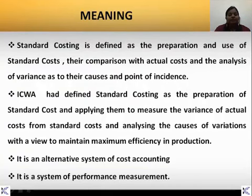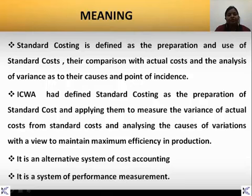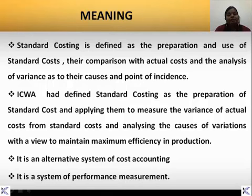Standard costing is defined as the preparation and use of standard cost, their comparison with actual cost, and the analysis of variance as to their causes and point of incidence. That means what cost should be and what cost is — the difference is what is called variance. This variance either can be favorable for an organization or adverse for the organization.